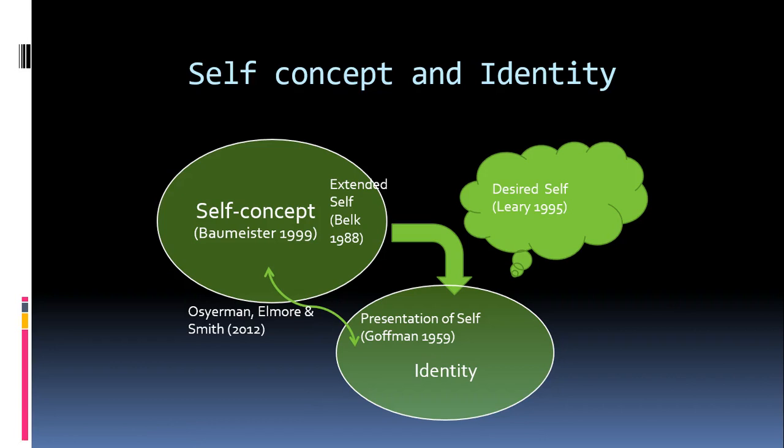Goffman's argument was that not only do we present ourselves to others, but we manage that process — we think carefully about how we want others to see us. This is reinforcing of the self-concept; if we consider ourselves confident and present that way, it reinforces that identity. Then we have the desired self — the aspirational or 'ought' self — the gap between who we are and who we want to become. These are important concepts for understanding why we buy the brands we buy.